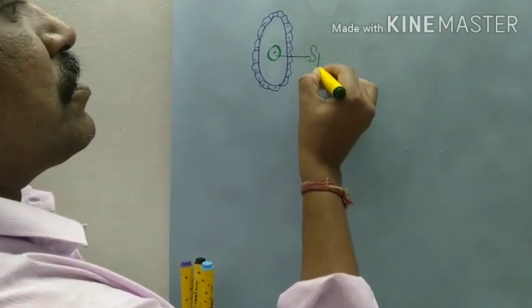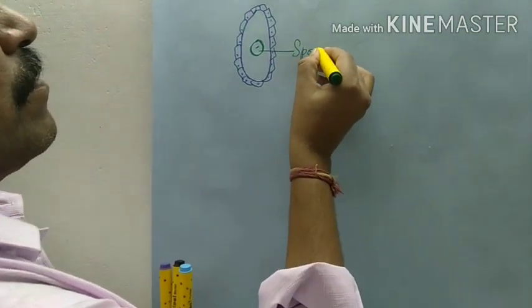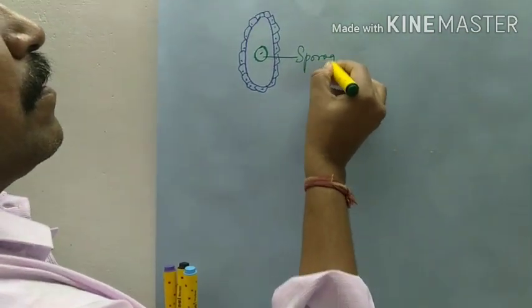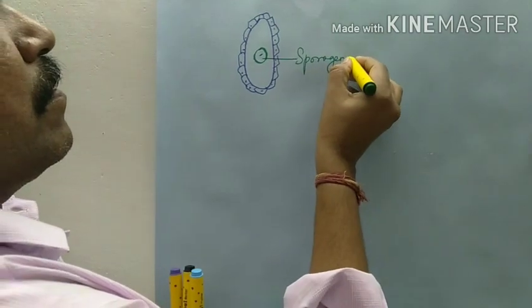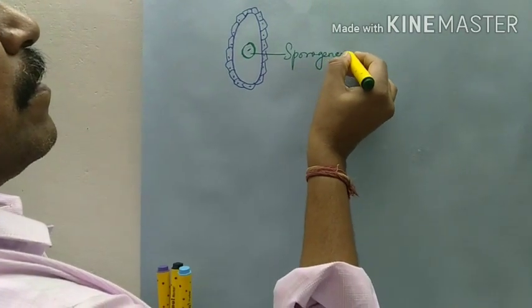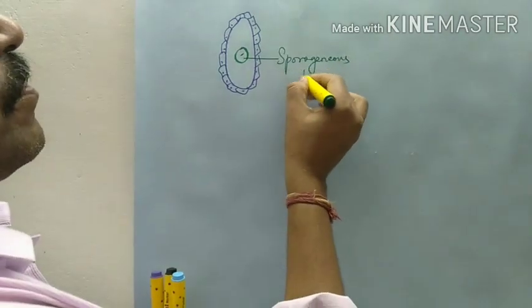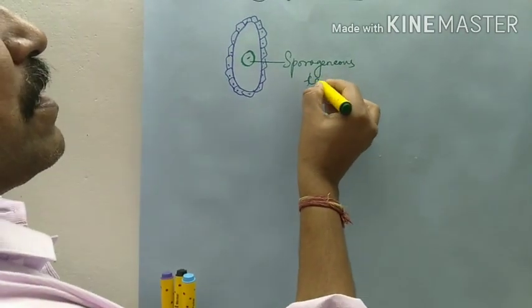We have the sporogenous tissue — sporogenous cells.